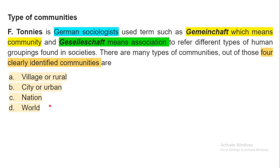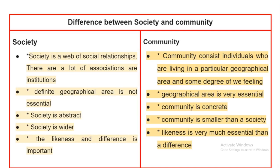Now, what is the difference between community and society? Society is a web of social relationships with many associations and institutions. Community, on the other hand, consists of individuals living in a particular geographical area with some shared degree of 'we-feeling' — there is no emphasis on large associations and institutions; it consists of individuals in a locality.